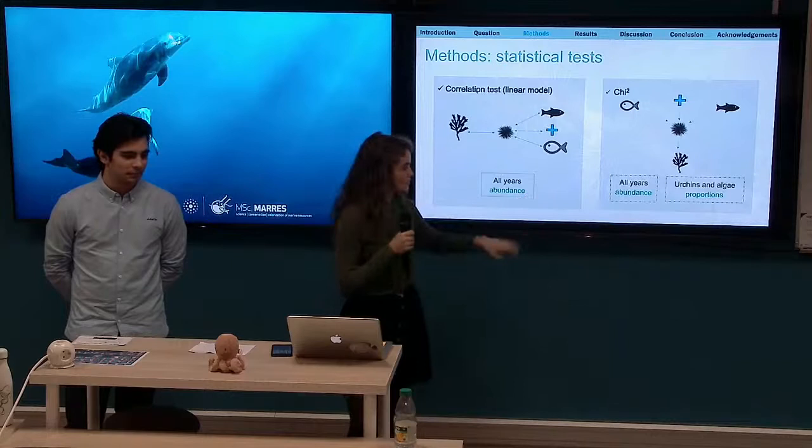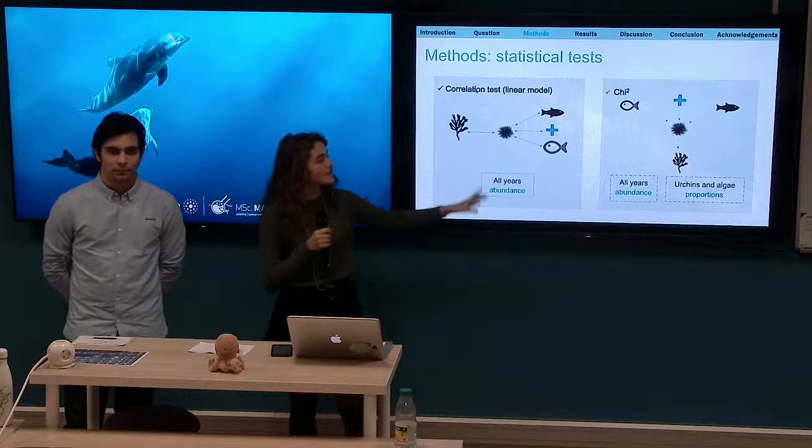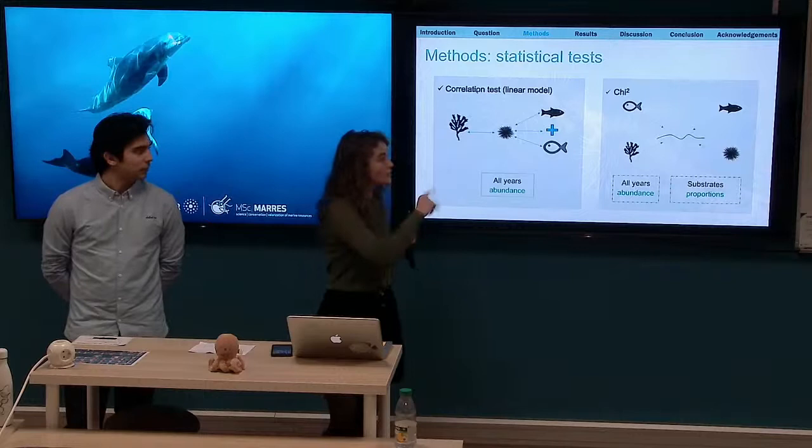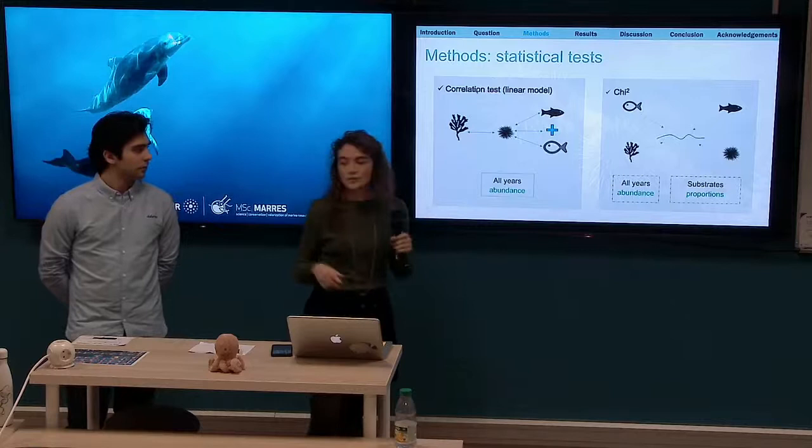For the chi-square test we used all years' abundance data, looking at predators of urchins and urchin and algae proportions. Additionally, in order to see if the relationship between abundances might be due to another factor, we assessed the possible preference of each group of organisms for substrate type.